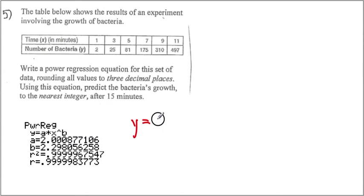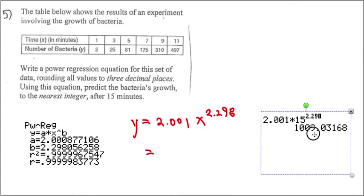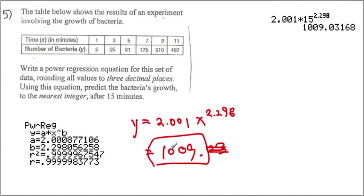Now, using this equation, predict the bacteria growth to the nearest integer after 15 minutes. So, we just have to put 15 in place of x. Then, we end up getting 2.001 times 15 to 2.298. Then, the y will be 1009.03. So, they want us to put the nearest integer, so 1009 will be our answer.